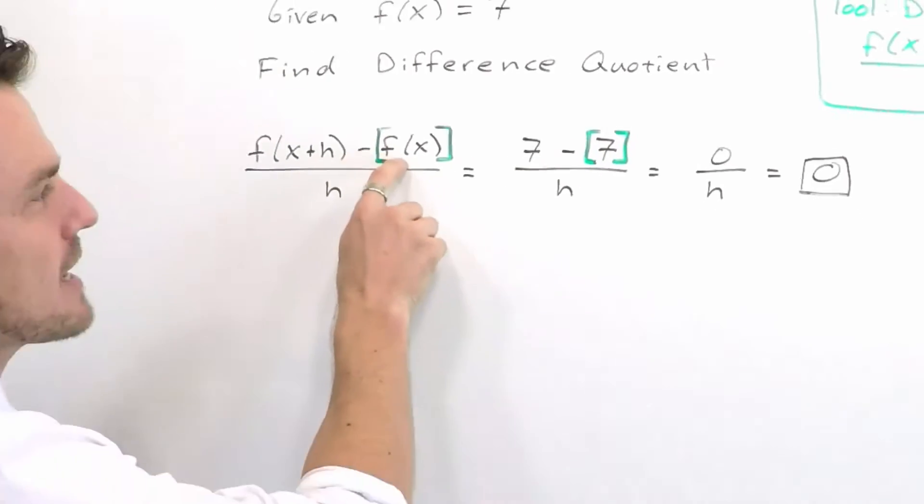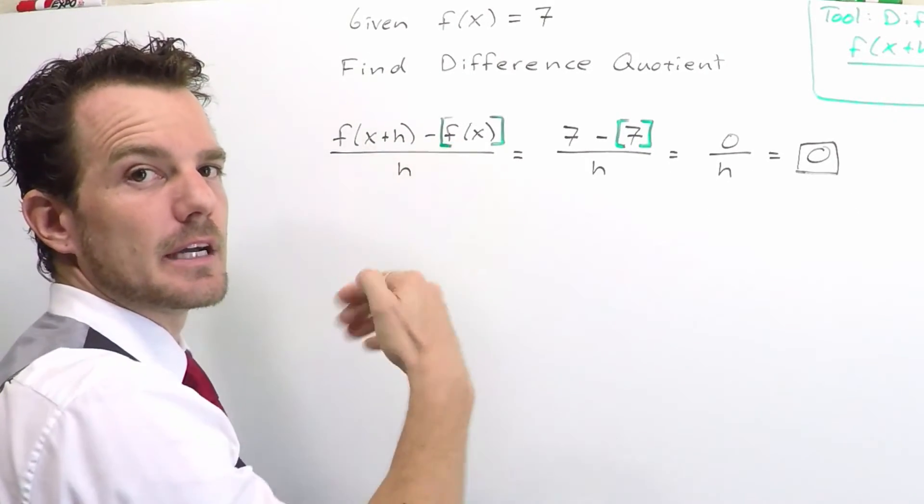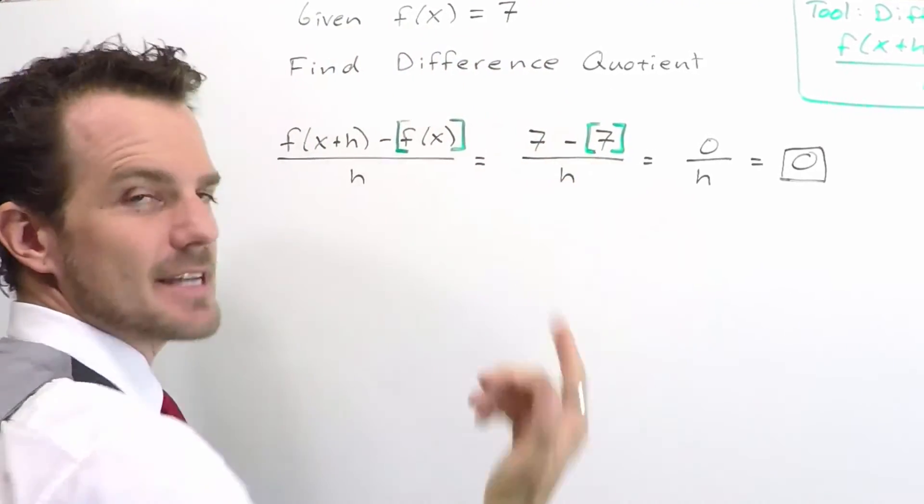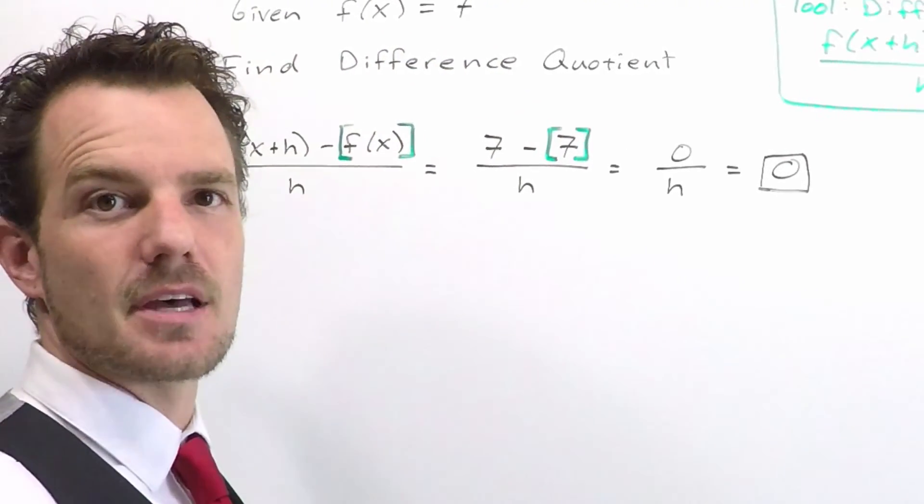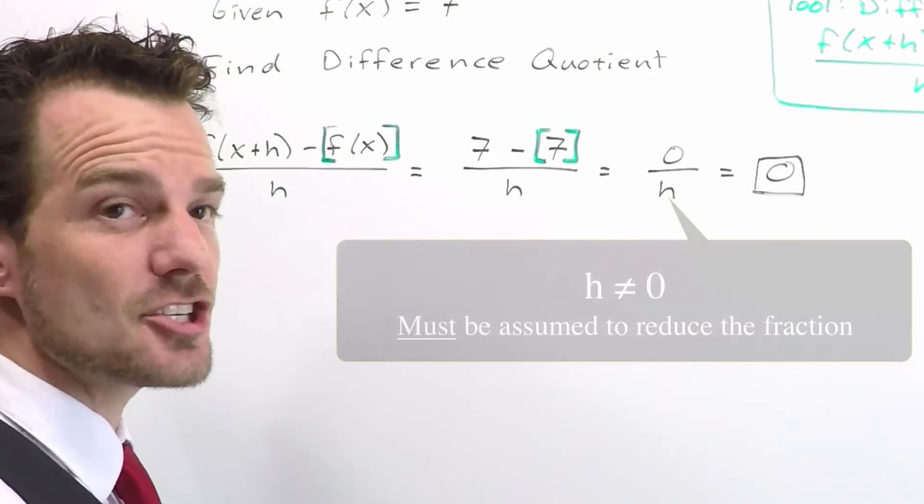So it says subtract all of the original. As we go back and subtract all the original, we subtract 7. And of course, 7 minus 7 gives us 0, divide by h.